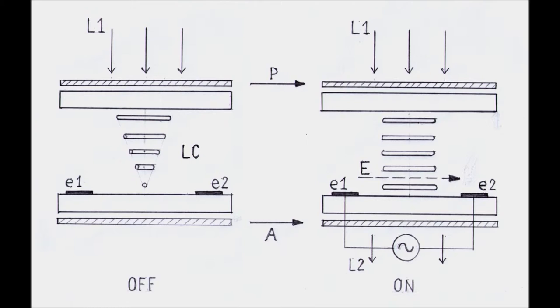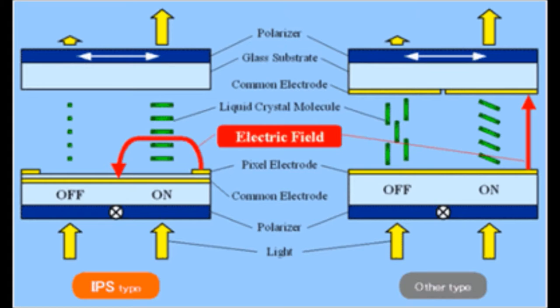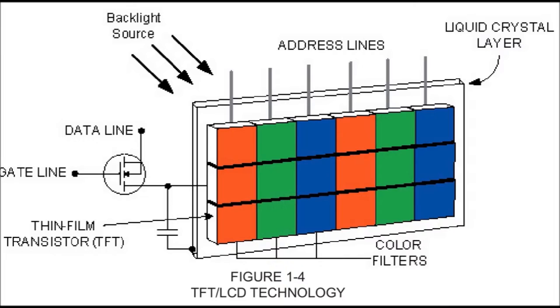IPS displays also fall in the category of LCDs because they also use liquid crystals, but in a different way than TFTs. The structure is similar — active matrix circuitry, polarizers, and liquid crystals between the glass and backlights. But there's a key difference: the polarizers in an IPS display are not at right angles to each other but are in the same plane. When there's no current, light passes through the first polarizer, gets twisted by the liquid crystals, and is blocked by the second polarizer.